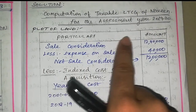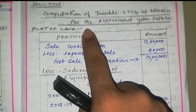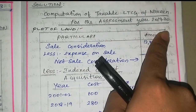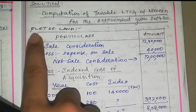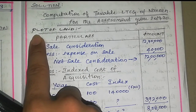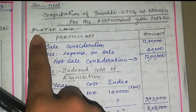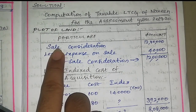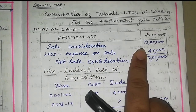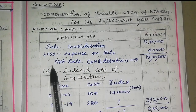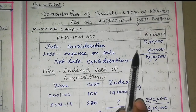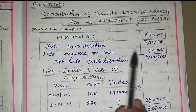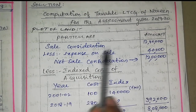Computation of taxable long term capital gain of Mr. Navin for the assessment year 2019-20. Sale consideration is Rs. 12,40,000, less sale expenses Rs. 40,000.